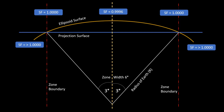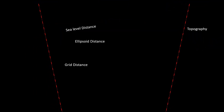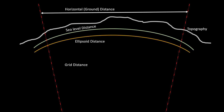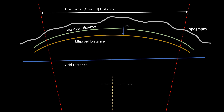Not so fast — there are a few complications. Let's try to discuss them. Let's draw measured distances on all the possible surfaces: from ground to horizontal distance, to geoidal sea-level distances, to ellipsoidal distance, and lastly grid distance. They may not be in the same order — this is just for easy understanding.